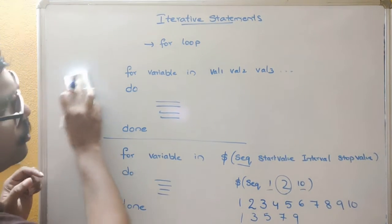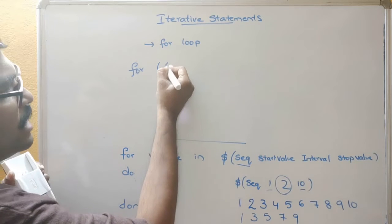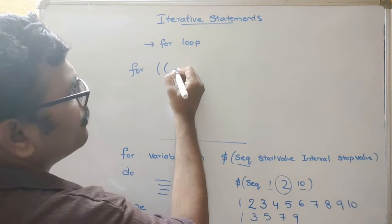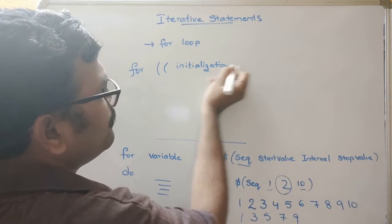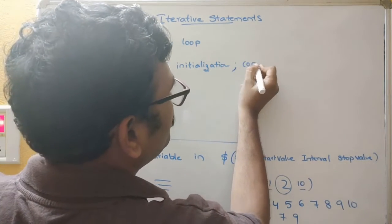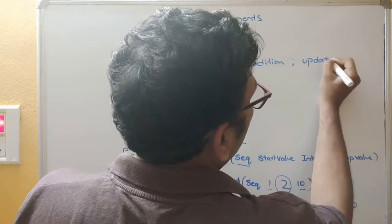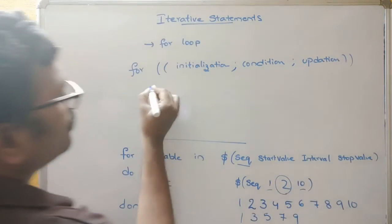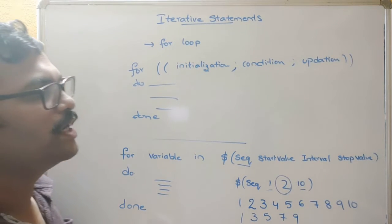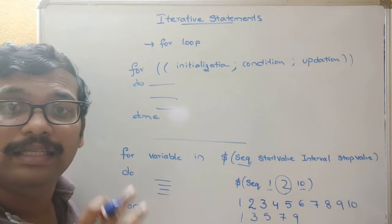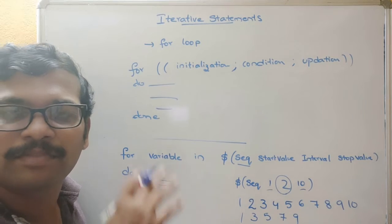There is one more way, similar to C language — you can use a for loop with double parentheses: the initialization, semicolon, condition, semicolon, updation. Then 'do', write down the statements, and finally 'done'. This is one more way to execute the for loop.